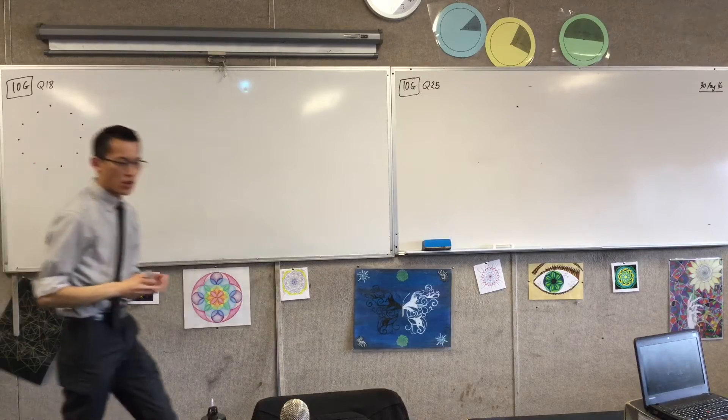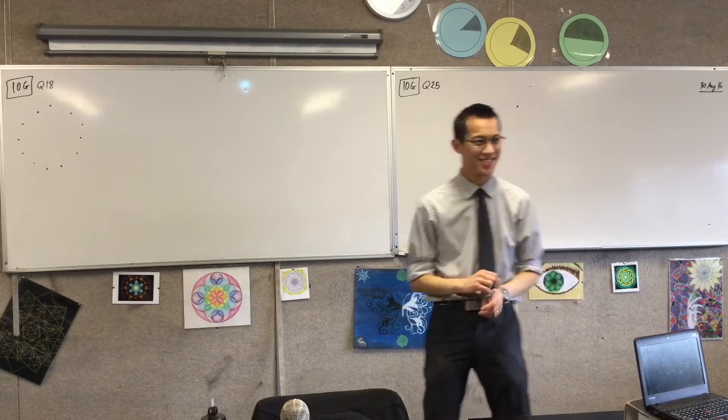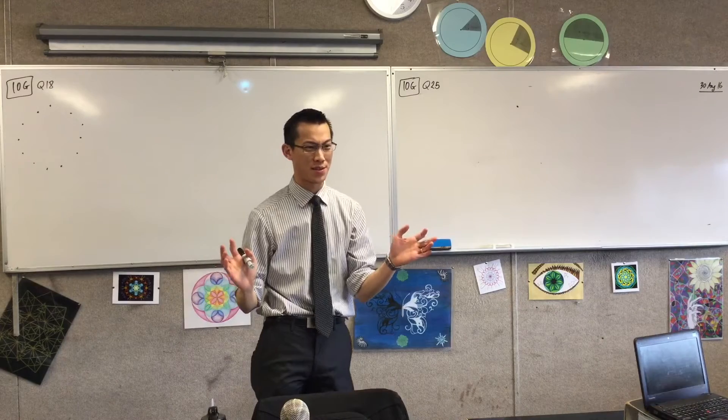There we go, so here are the 12 points on the circumference of my circle, not very circular. Now, part A is the easiest one, it's kind of like no conditions whatsoever.